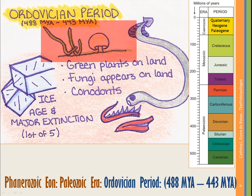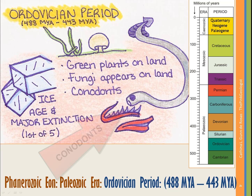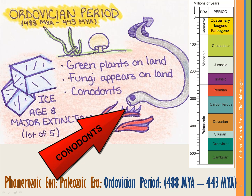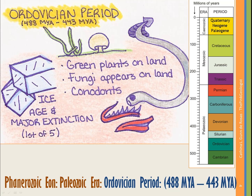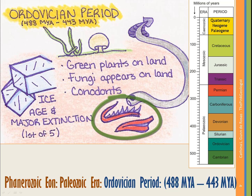This is where we first see conodonts. And conodonts, if you're any kind of economic geologist, you're going to see these again — especially if you work in oil and gas — because for the longest time, scientists had no idea what this fossil belonged to. It turns out it's the complicated mouth anatomy, teeth and different little bones of this nasty, tiny, little worm-looking creature.